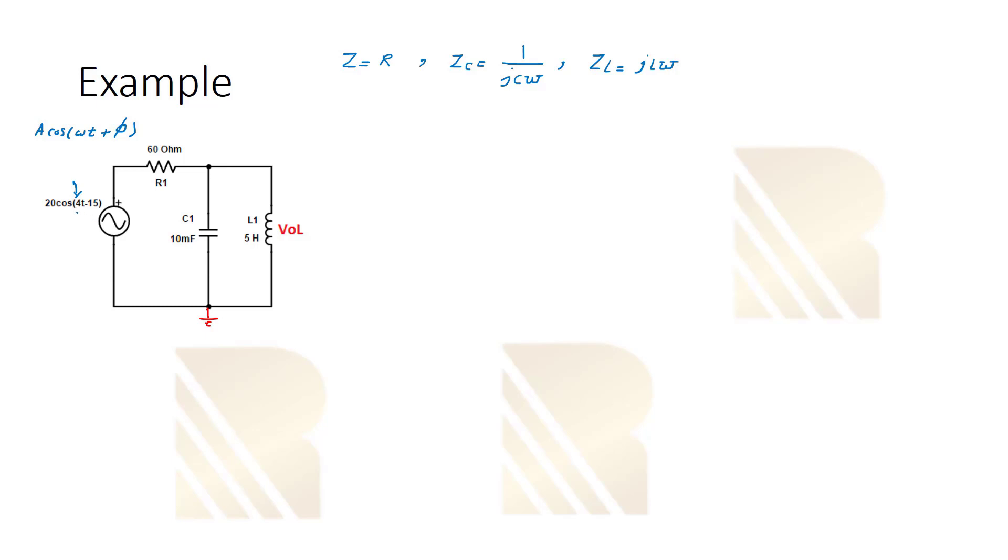So let's see if we have really high frequency what happens to the circuit. We say we have really high frequency, omega is high. In this case, because the denominator for this one is high, ZC will become zero. It means that the capacitor will become short if we increase the frequency. And what about ZL? The impedance for this inductor will be a very high value.